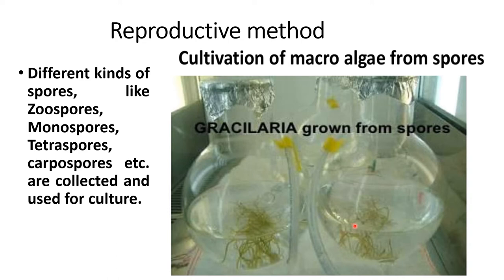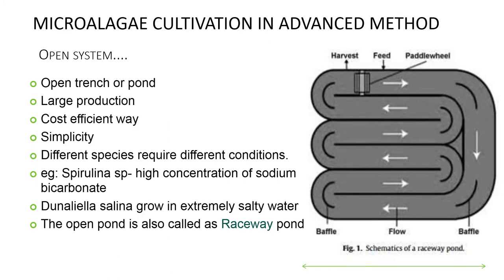The reproductive method also comes under macroalgae cultivation. Macroalgae are grown from spores — such as zoospores, monospores, tetraspores, carpospores, etc. — which are collected and used for cultivation. An example is Gracilaria. Open pond cultivation: algae can be cultured in open ponds such as a raceway, or cultivated in lakes or ponds. There are two main advantages of culturing microalgae using an open pond system: it is easier to build and operate, and open ponds are cheaper than closed photobioreactors.